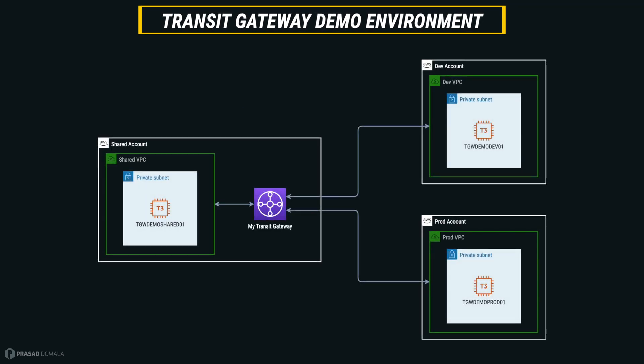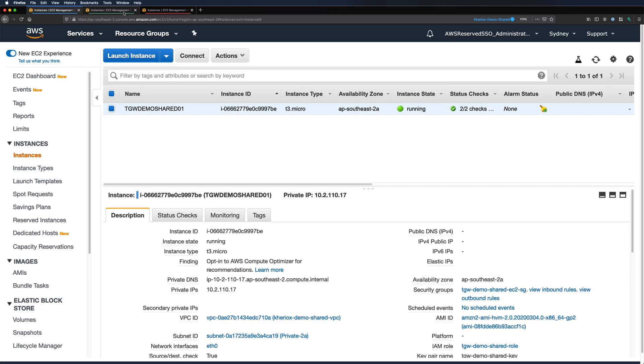Now let me talk about the demo environment we'll be setting up today. I'll use three of my AWS accounts — shared, dev, and prod — and I have a VPC in each of these accounts in the Sydney region. I created an EC2 instance in a private subnet in each VPC, which we'll use to do a ping test to verify connectivity. I created these VPCs and EC2 instances using Terraform templates — I'll leave the repo links in the description. I'll create the Transit Gateway in my shared account, share it with dev and prod, attach all three VPCs, and finally do a ping test to verify connectivity. Note that I don't have a site-to-site VPN to demo, so I'll stick with VPCs, but the concepts of attachments, associations, and propagations are identical.